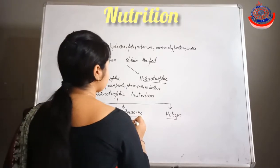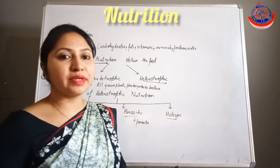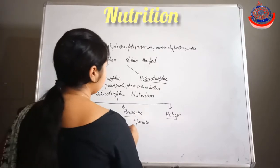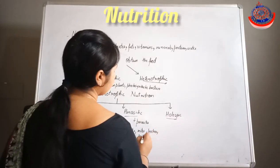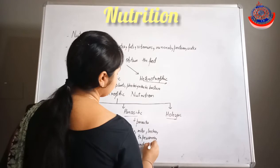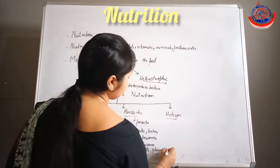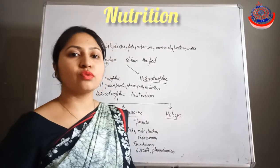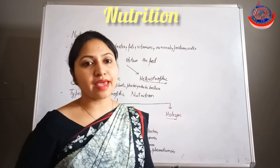Parasitic nutrition involves parasites which depend upon a host body for their survival, obtaining nutrition from living organisms without killing them. Examples include ticks, mites, leeches, tapeworms, roundworms, Cuscuta, and Plasmodium. Parasites that feed on the surface of the host body are called ectoparasites, while those that enter the host body are called endoparasites.